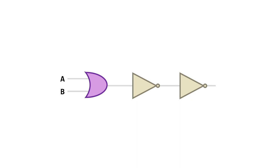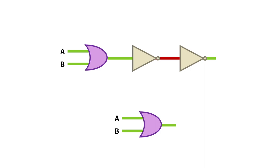An AND gate going into a NOT gate and then into another NOT gate. You may have already spotted a problem here. Let's watch what happens when we feed it a pair of ON signals. The AND gate outputs ON, which is inverted by the NOT to an OFF and then inverted again by the second NOT gate into an ON again.